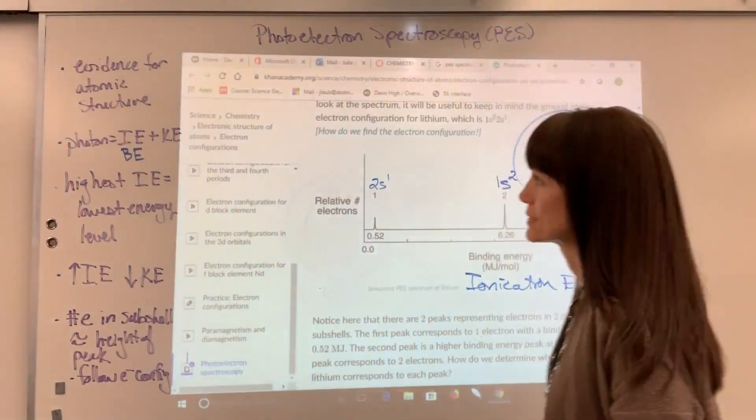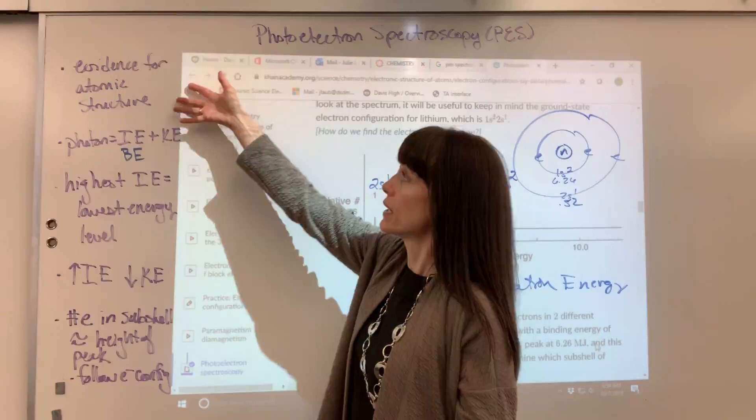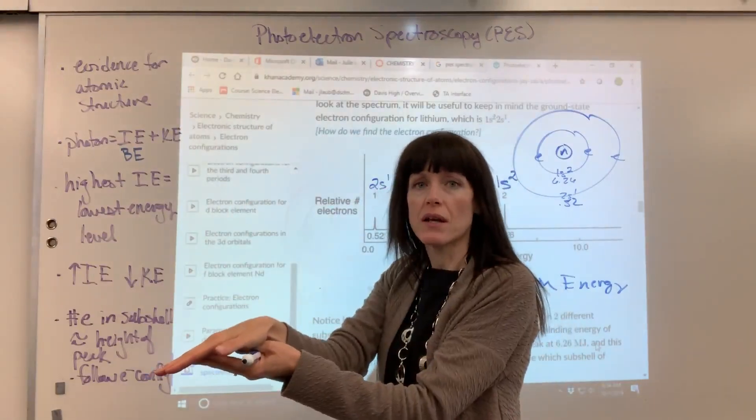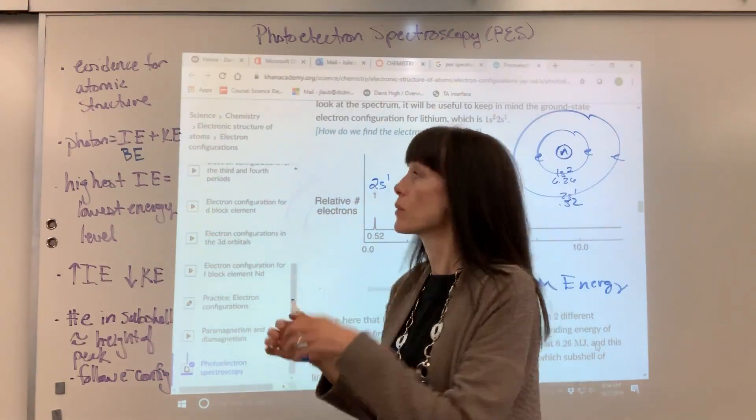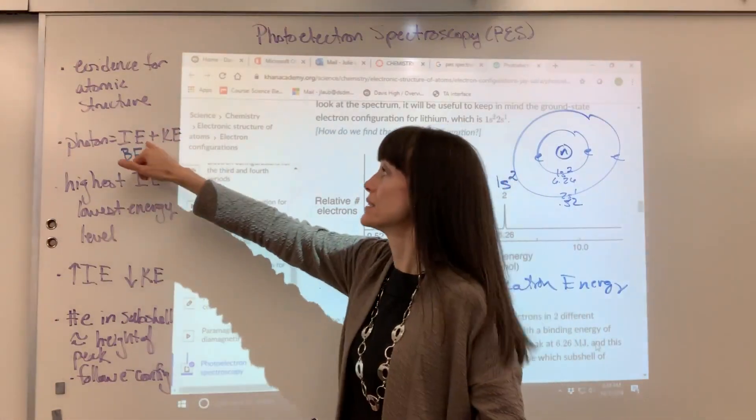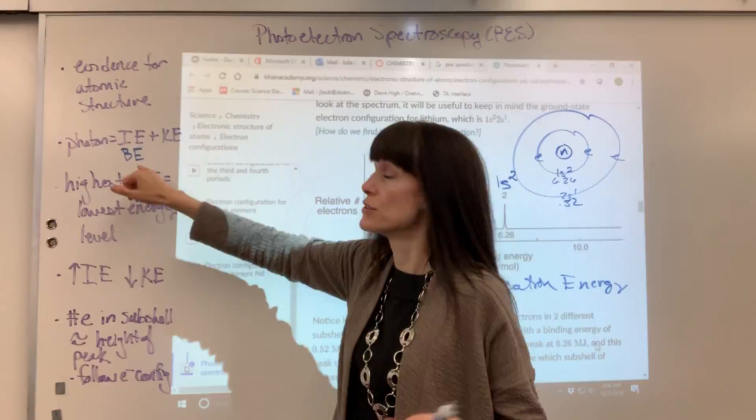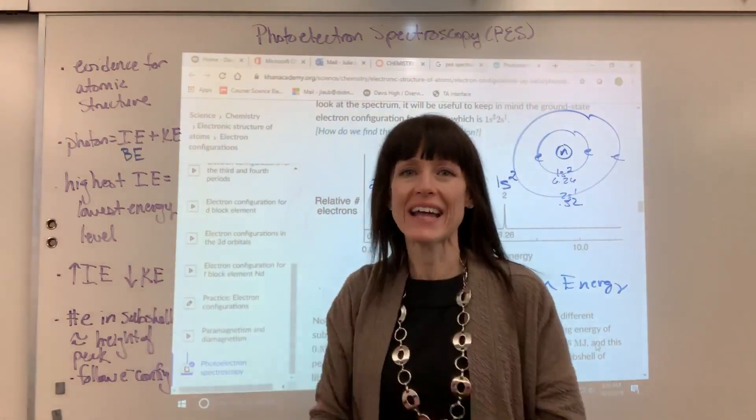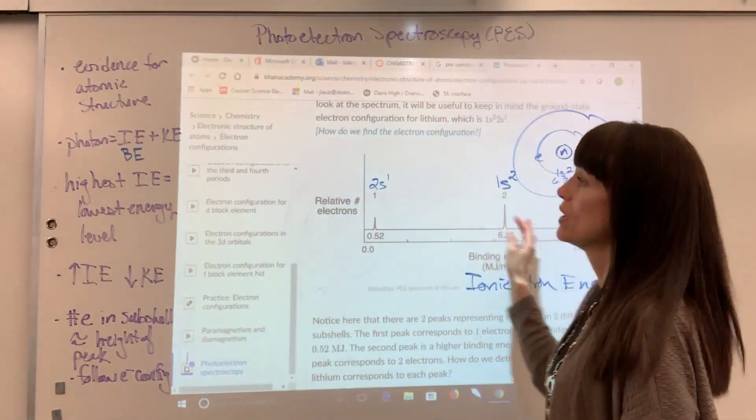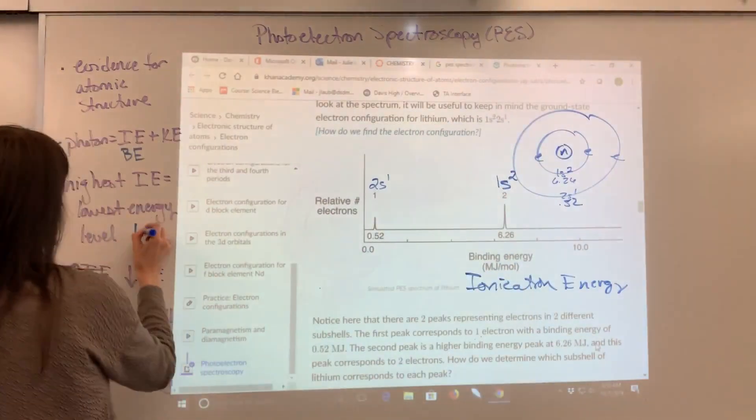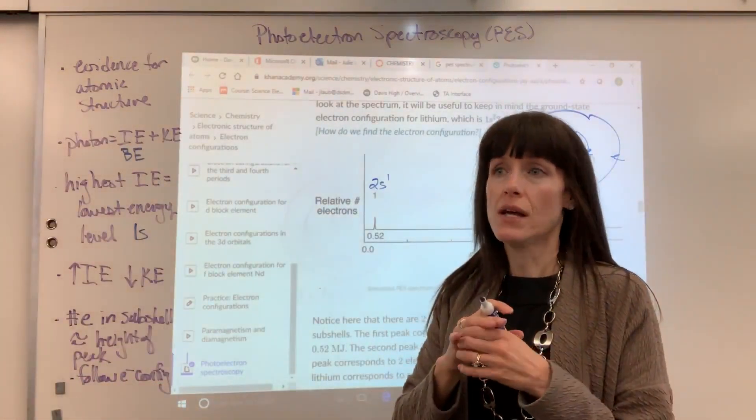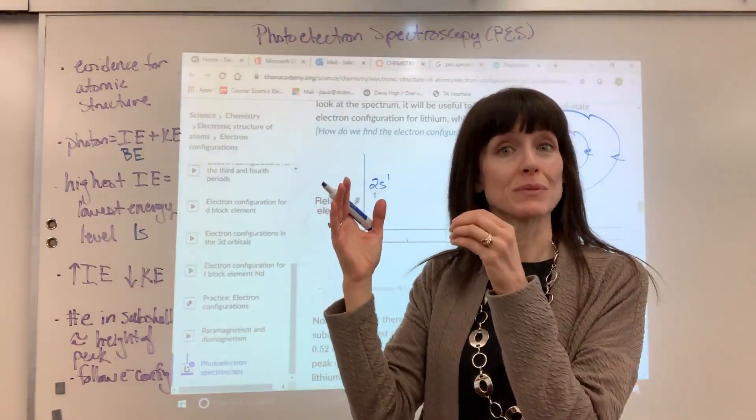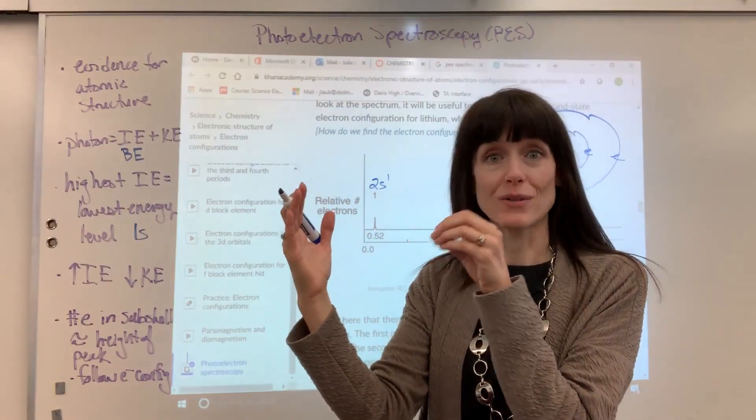Now, a couple of takeaways, and we'll do one more example. So again, PES is evidence for atomic structure. You can see it right here. Here is the driving formula. The energy you put in is going to hit the electron, goes to two places. Number one, energy to remove the electron, that's the ionization energy. Same thing equivalent to binding energy. And the speed at which the electron flies away. So your really quick takeaway, the highest ionization energy that you have on the spectrum is always going to be the lowest energy level, which is your 1s. Highest ionization energy will always be the lowest energy level, your 1s, because it's Coulomb's law. That energy level is closest to the nucleus.